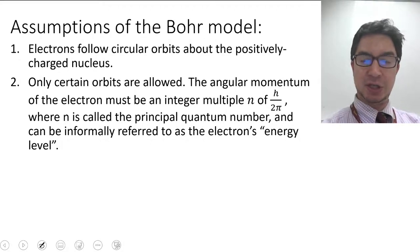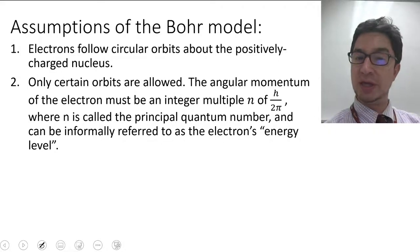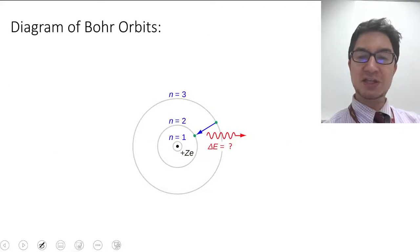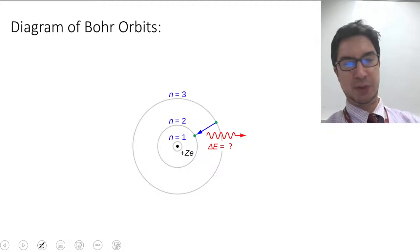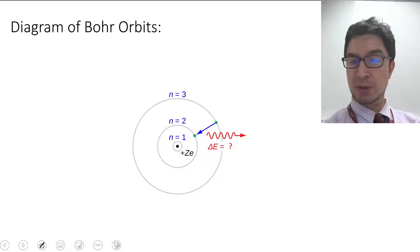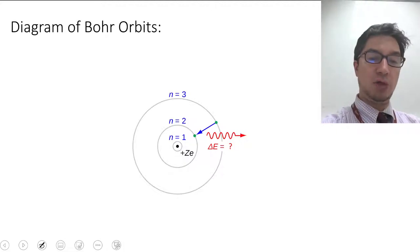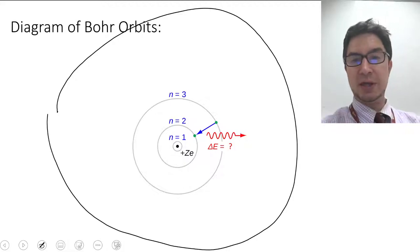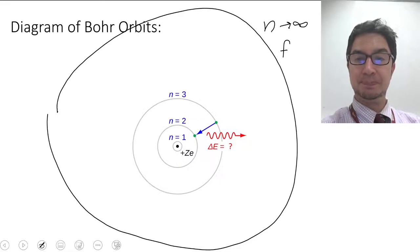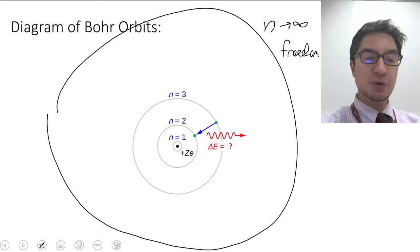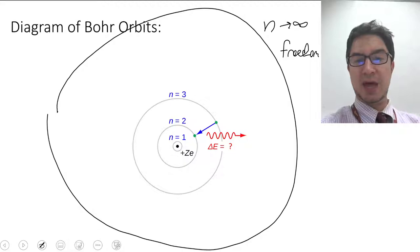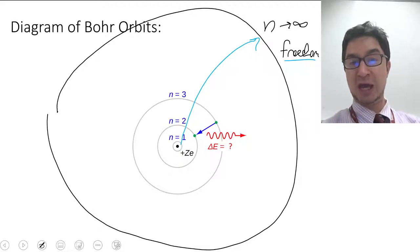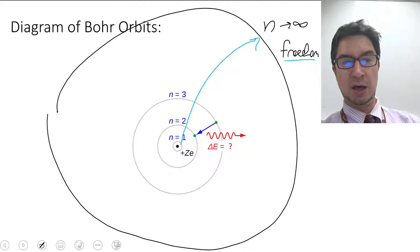Let's take these assumptions and run with them the way Niels Bohr did. This is what we refer to as a diagram of Bohr orbits, where n equals 1 is the lowest orbit, n equals 2 is the next, n equals 3, and so on, all the way until n approaches infinity. All the way out at n approaches infinity, this is where the electron achieves freedom — if you give the electron enough energy to jump from n equals 1 to n equals infinity, it can literally be ejected from the atom.